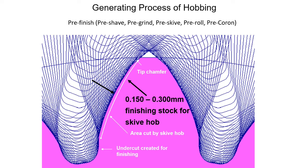When preparing the gear for hard-hobbing, between 150 and 300 microns of stock per flank is generally preferred.